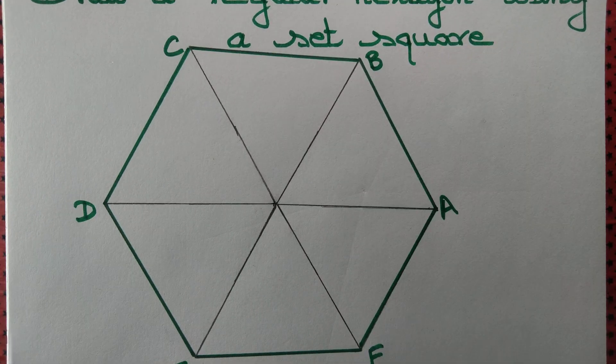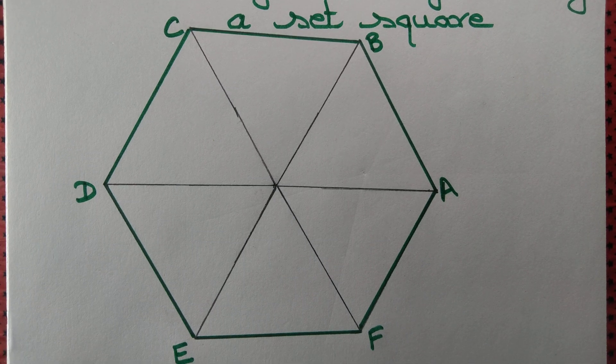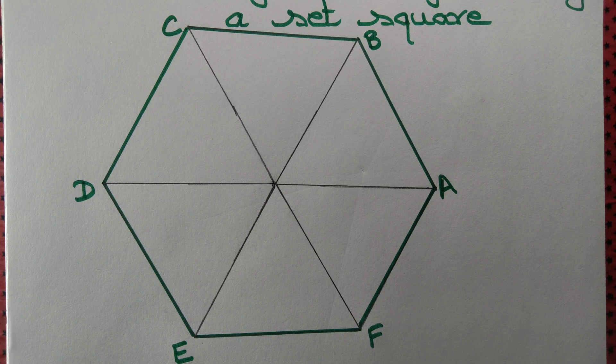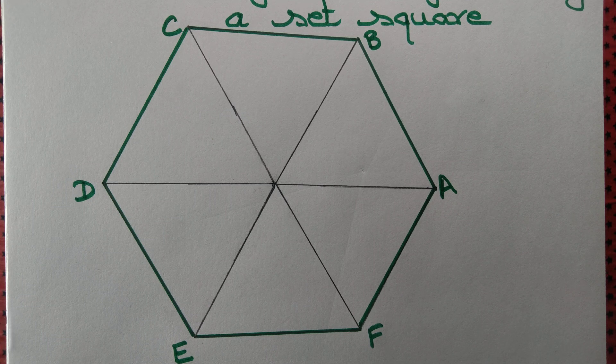A, B, C, D, E, F is a regular hexagon. We drew it just using a set square.